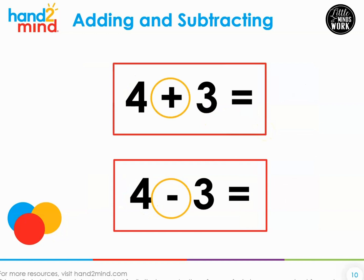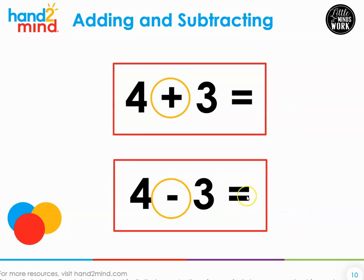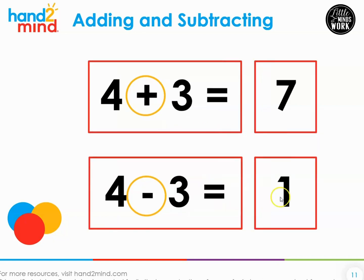Another problem. 4 plus 3. Go ahead and put down 4 items plus 3. Go ahead. What answer did you get? Yes. 7. 4 plus 3 equals 7. Let's try the next one. 4 take away 3. Go ahead. What answer did you get? Yes. 1. 4 take away 3 equals 1.